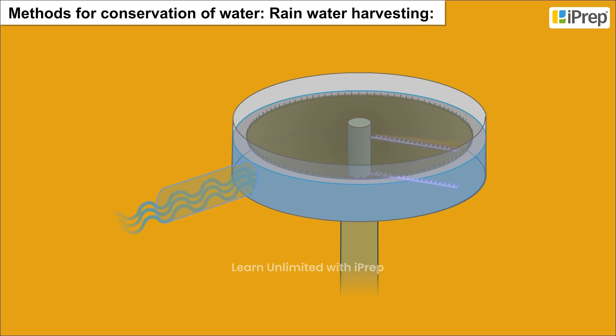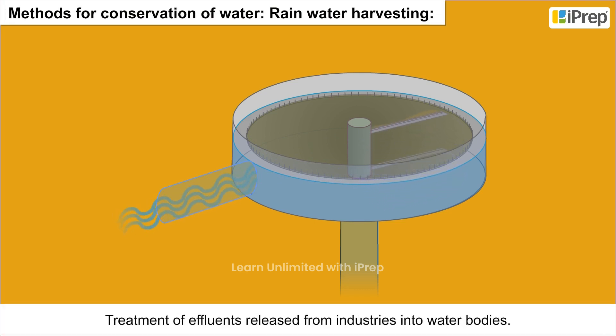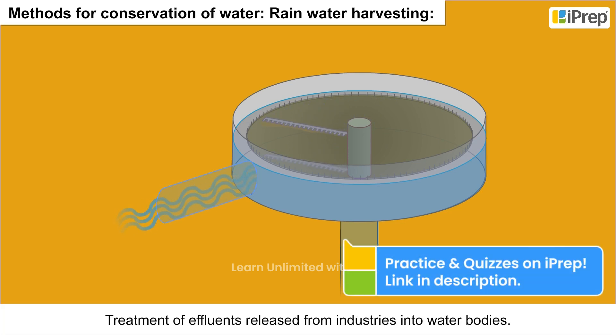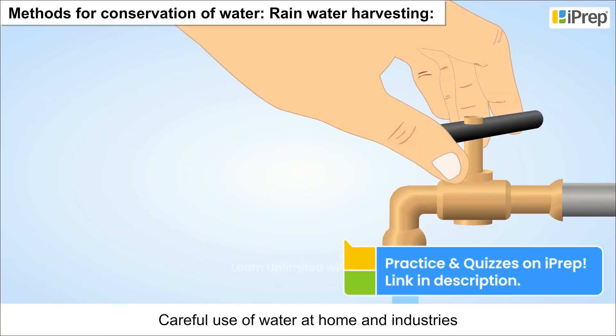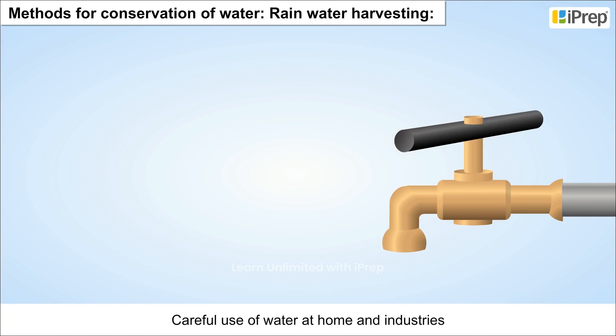Methods for conservation of water include rainwater harvesting, treatment of effluents released from industries into water bodies, and careful use of water at home and in industries.